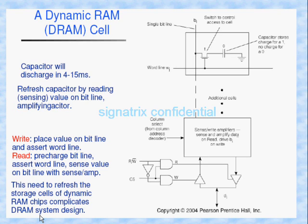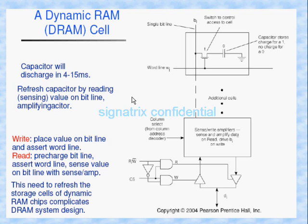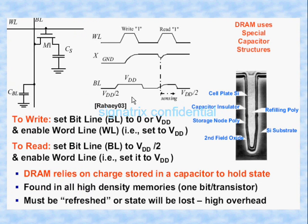This need to refresh the storage cells of dynamic RAM chips complicates DRAM system design. Since we are using a capacitor, which has a dynamic nature, we have to constantly refresh it. In order to refresh the capacitor we need refresh circuits, which ultimately increases hardware. This is the main disadvantage of the DRAM cell.